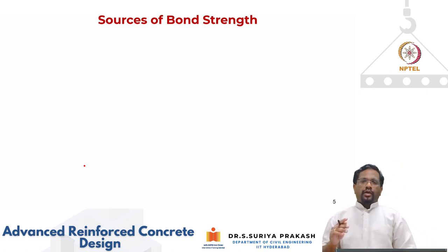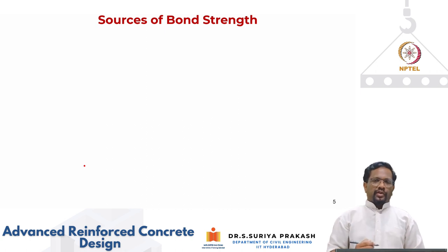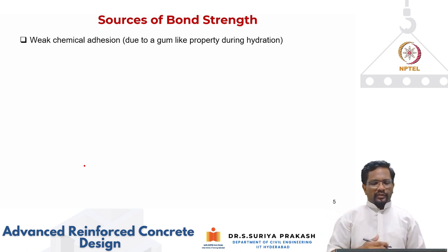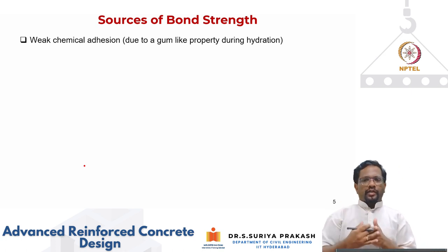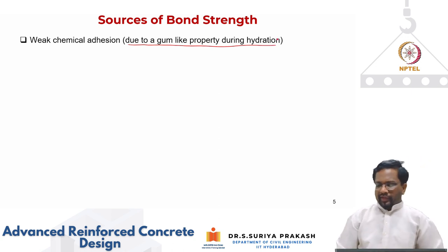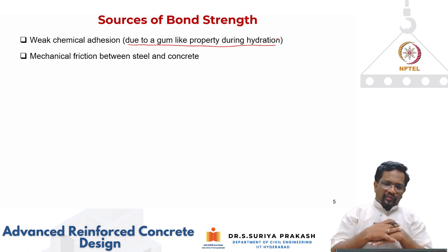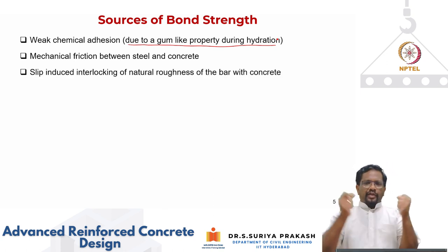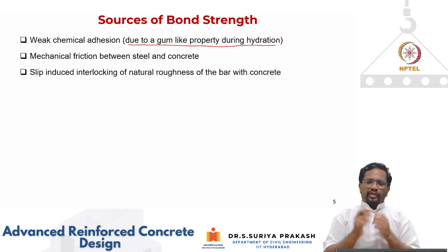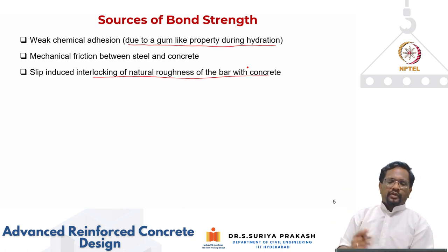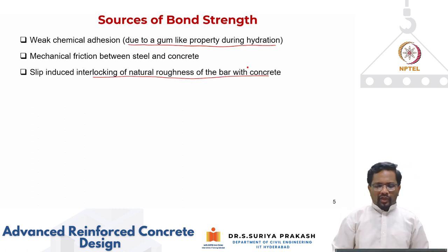Let us look at how bond strength develops and its sources. When concrete is placed, cement starts hydrating and there is adhesion between the rebar and surrounding concrete due to formation of calcium silicate hydrogels — a gum-like property formed during hydration. There is also mechanical friction between the steel and concrete surface at the interface. In addition, when the bar achieves tension, some slip and deformation occur, and the slip-induced interlocking also helps produce bond strength due to the natural roughness of the bar surface.